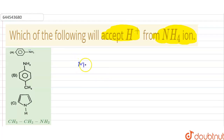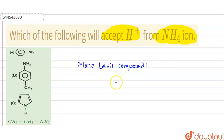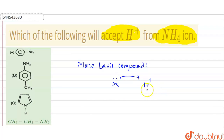This is possible for the more basic compounds. The more basic compounds can only accept the H+ ion from NH4+. If we say X is the more basic compound which has the lone pair that can be donated to the H+, it will accept the H+ from the NH4+ ion.